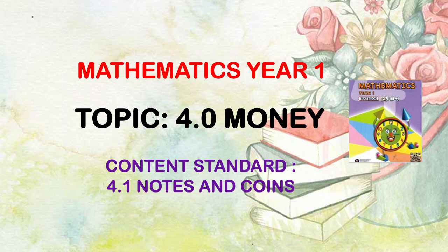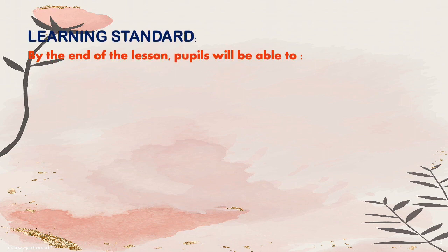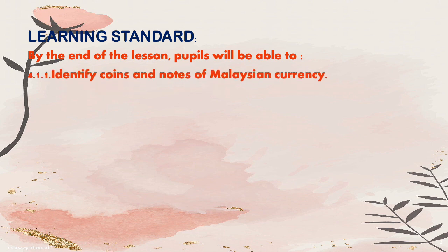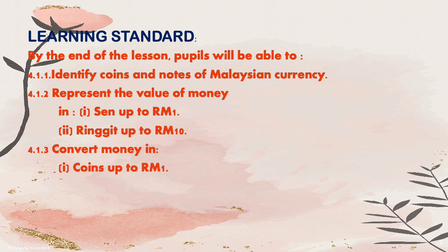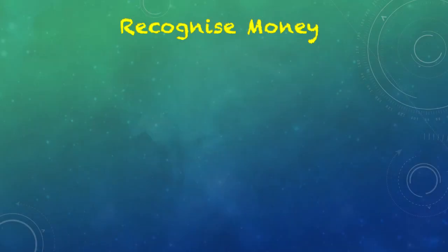Hi everyone, today we are going to learn mathematics on the topic of money. The content standard is notes and coins. Learning standard: by the end of the lesson, pupils will be able to identify notes and coins on Malaysian currency, represent the value of money in cents up to one ringgit, and in ringgit up to ten ringgit, and convert money in coins up to one ringgit and notes up to ten ringgit.